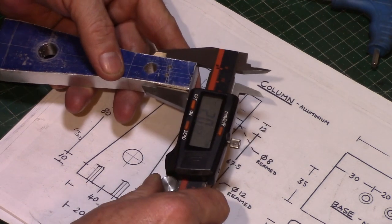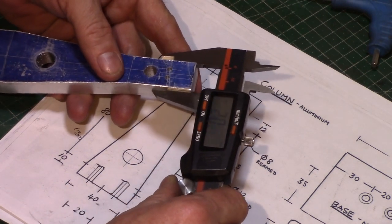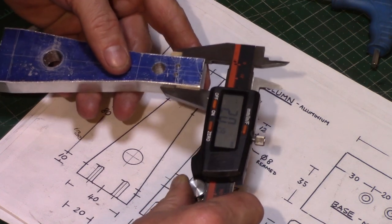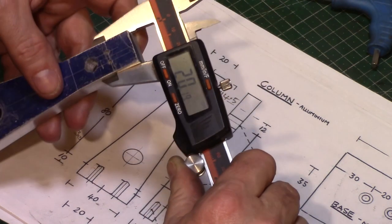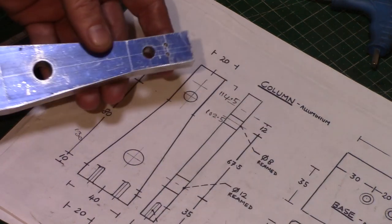Now the dimensions are not super critical and this is about 0.2 of a millimeter over size here but considering that it was just eyeballed to the scribe line I'm more than happy with that.